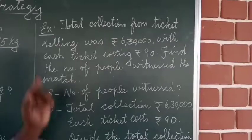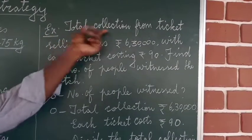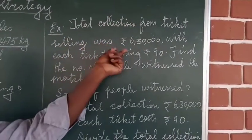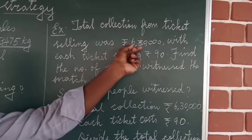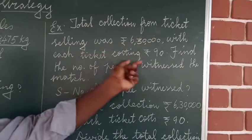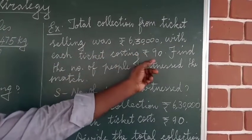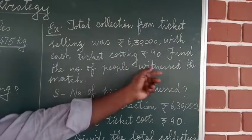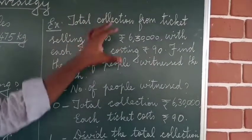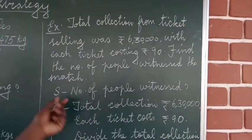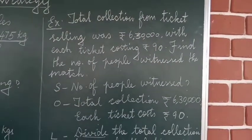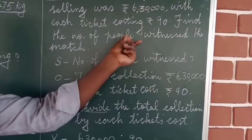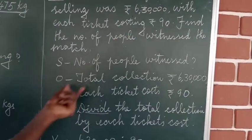Let us move on with the second example. Total collection from ticket selling was Rs. 6,30,000, with each ticket costing Rs. 90. Find the number of people who witnessed the match. S — study: number of people who witnessed the match — that's what we need to find out.